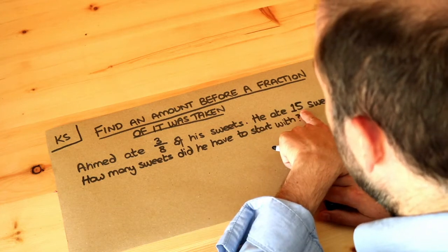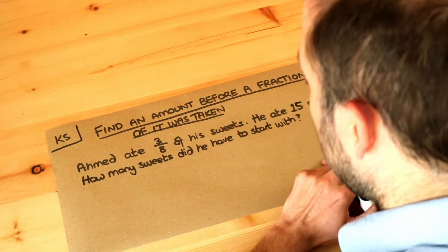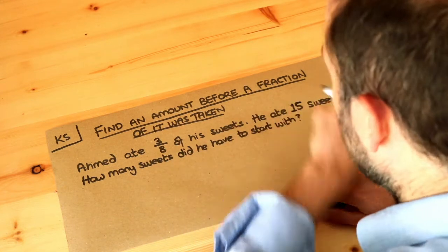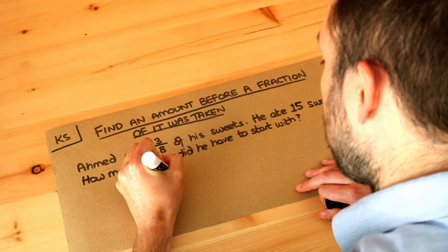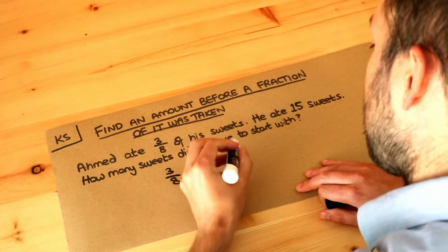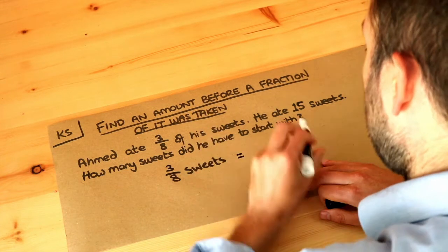Well the fifteen sweets he ate was three eighths of his sweets. It says he ate three eighths of his sweets and that was fifteen sweets. So we can write three eighths of his sweets is fifteen sweets.